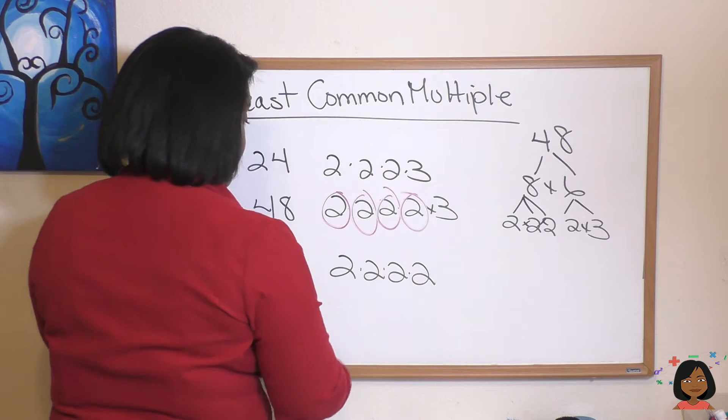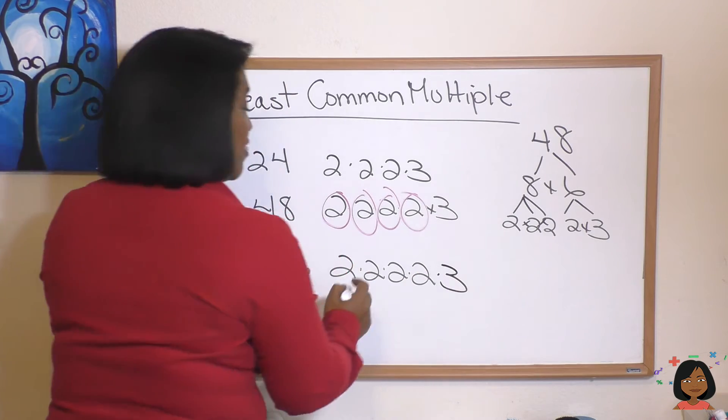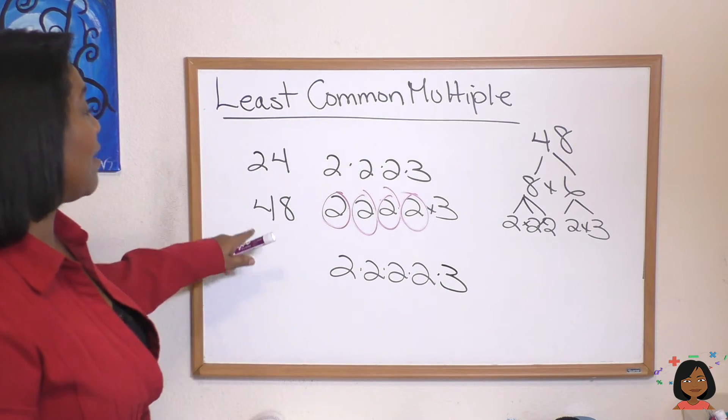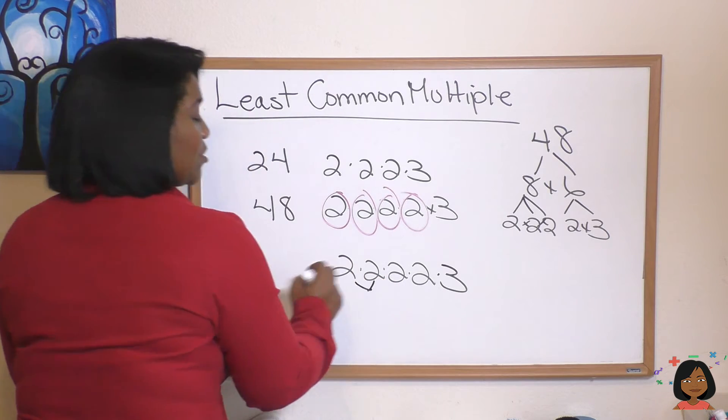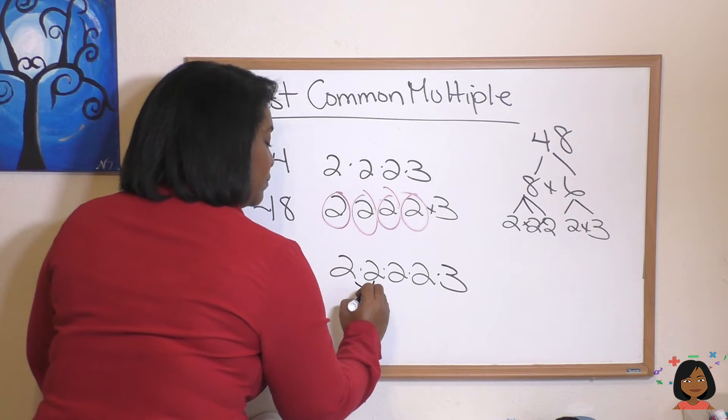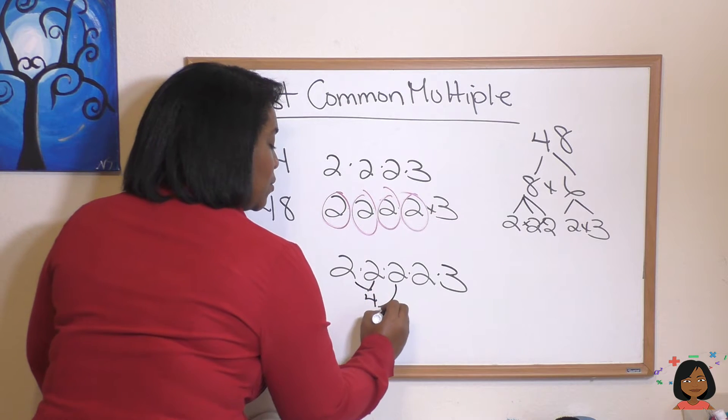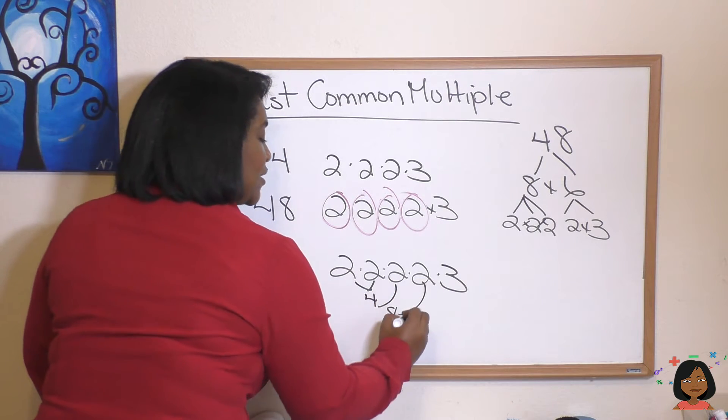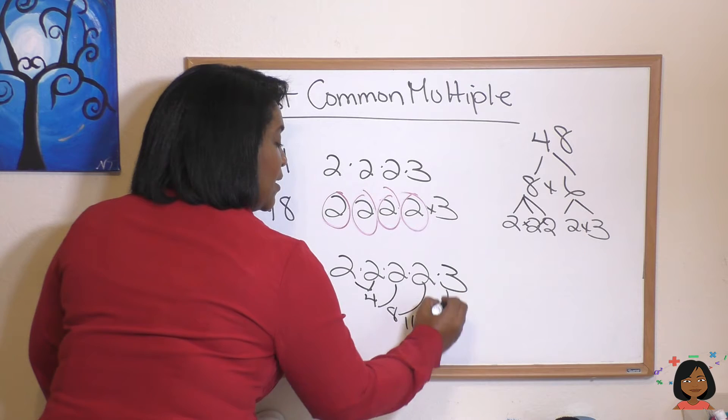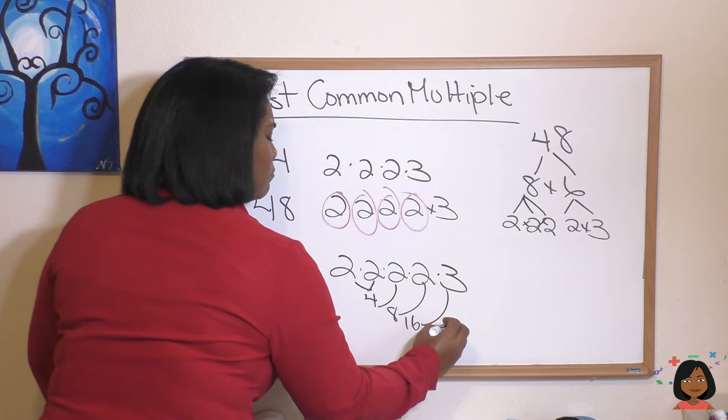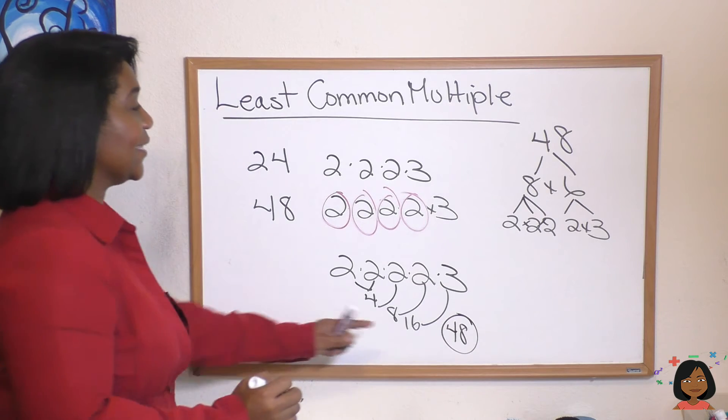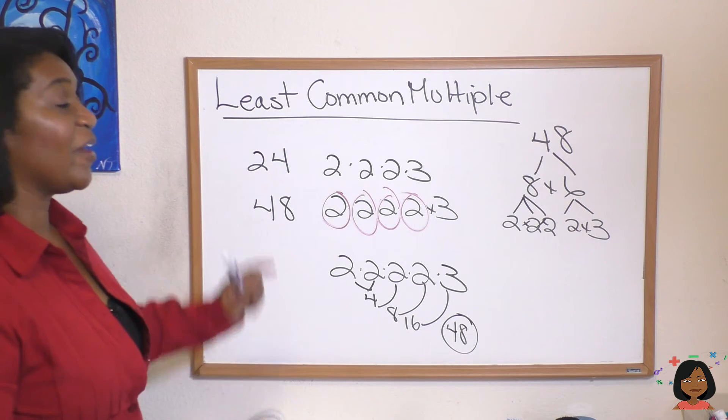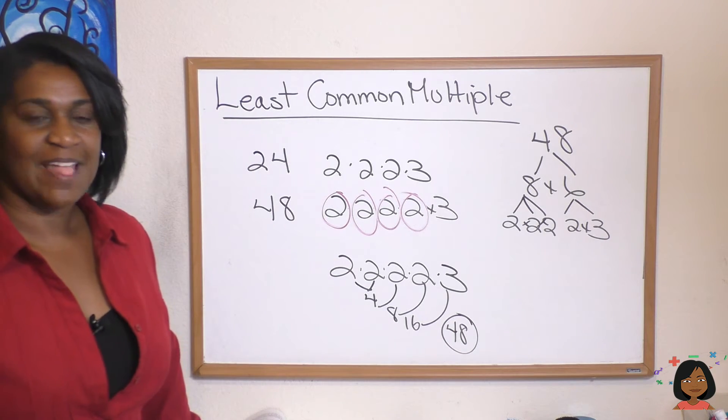Let's figure it out. Two times two is four, four times two is eight, eight times two is sixteen, and sixteen times three is forty-eight. Forty-eight is the least common multiple of twenty-four and forty-eight, and that's it.